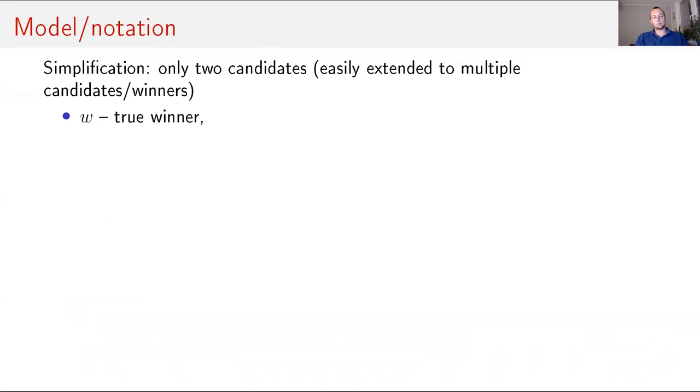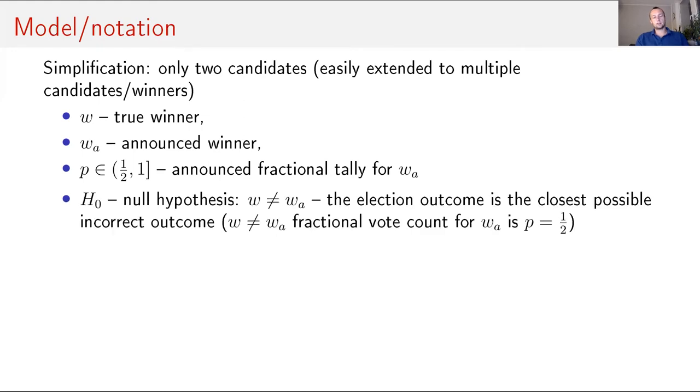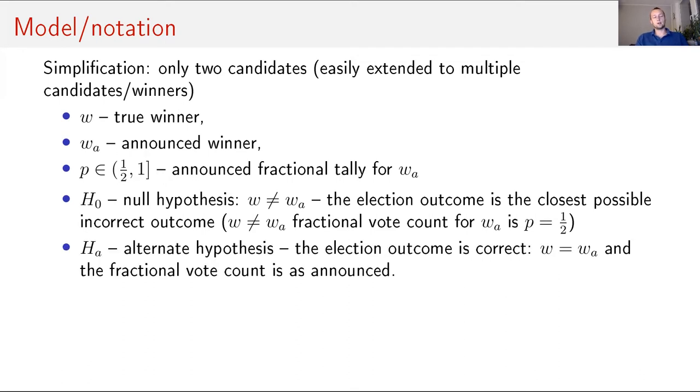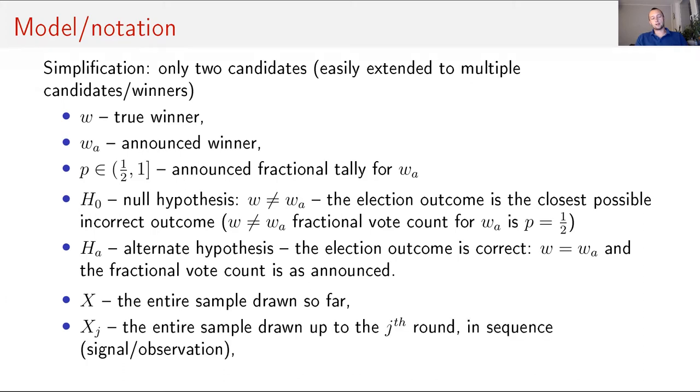I will briefly say about the model and notation that we will use here. We will focus our attention on two candidates. So we have just only two candidates and we have one declared winner. But everything what I'm going to say is easily extended to multiple candidates or winners. Let W be a true winner, W_a announced winner. P is announced fractional tally for W_a. So P is from one half to one. H_0 is null hypothesis. It is the closest possible incorrect outcome, which is that there was a tie between these two candidates. So there is no winner. And H_A is the alternate hypothesis that the election outcome is correct. X is the entire sample drawn so far. X_J is entire sample drawn up to J round. And A is the statistical test.